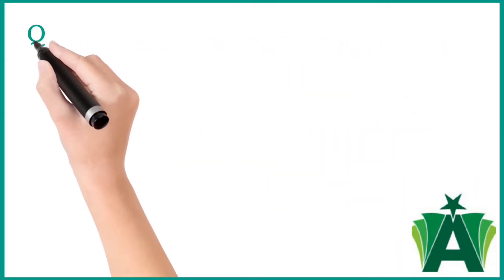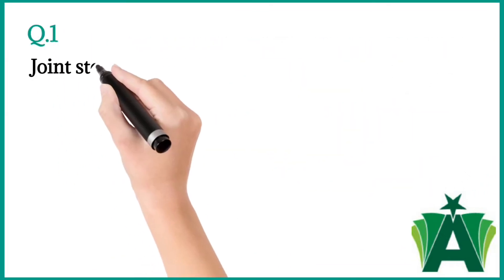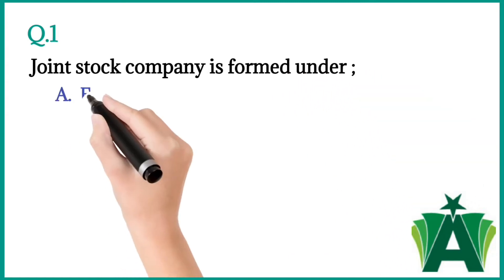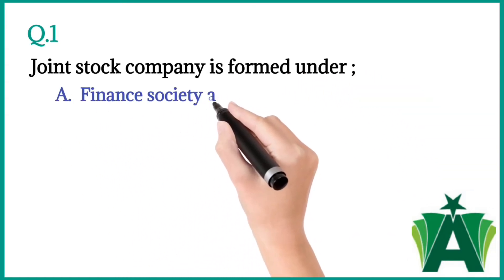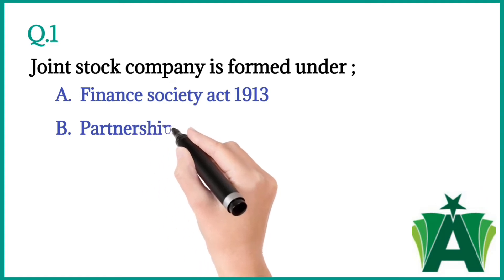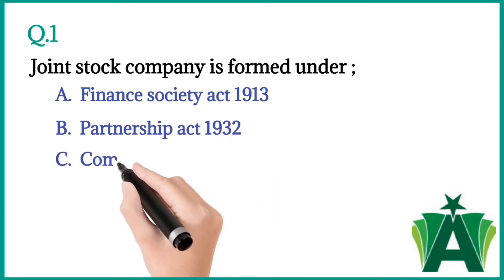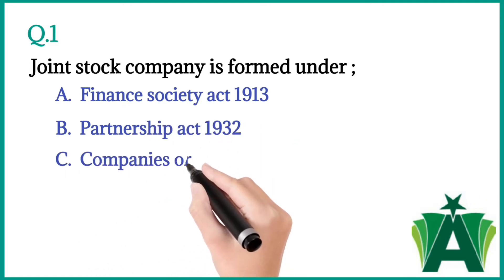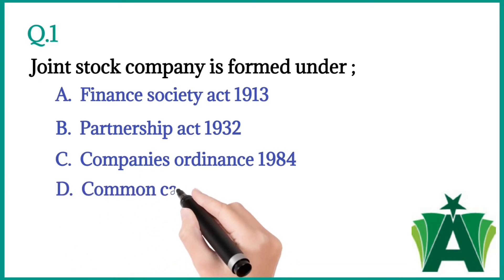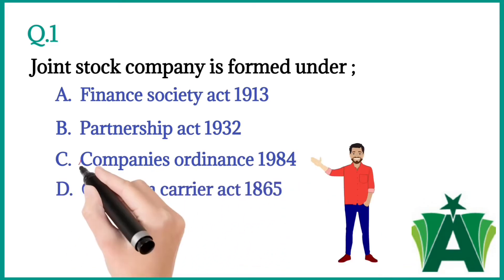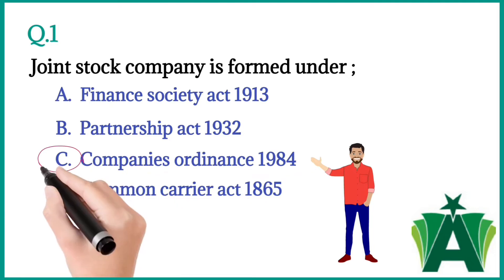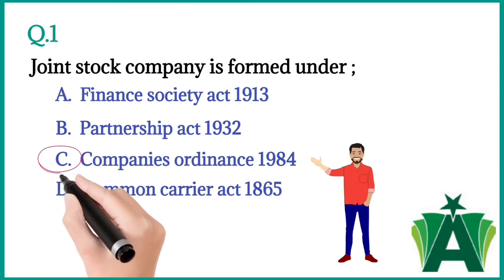Question number one: Joint stock company is formed under — a) Finance Society Act 1913, b) Partnership Act 1932, c) Company's Ordinance 1984, d) Common Carrier Act 1865. The correct answer is c) Company's Ordinance 1984.